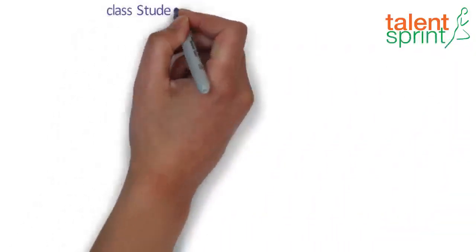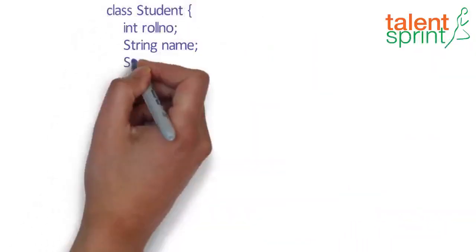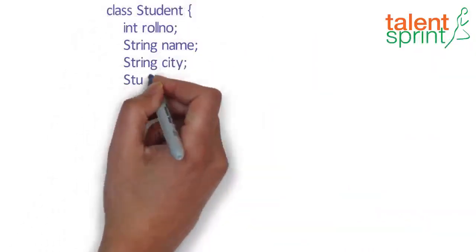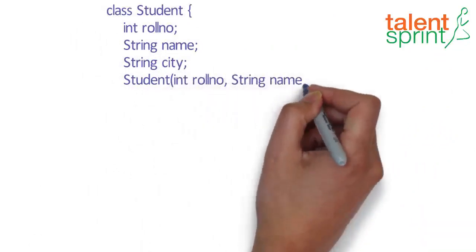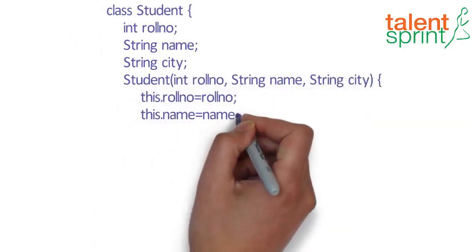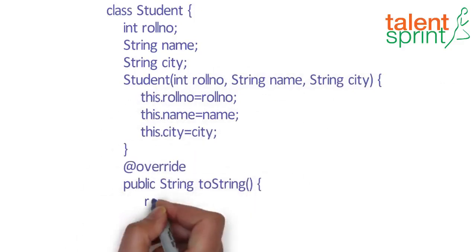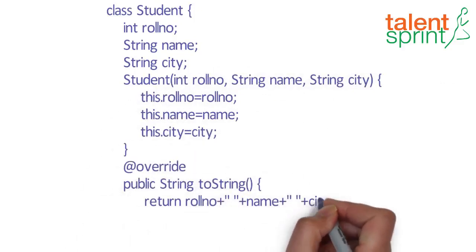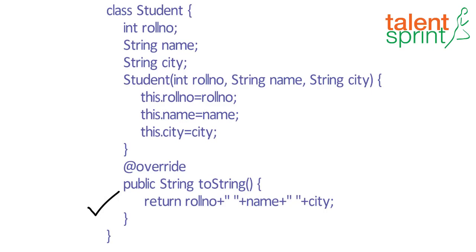Let's see how. In the example shown here, we have a class named Student with rollNumber, name, and city as three fields, and a constructor to initialize them. Now the toString() method would look something like this — a simple one-liner that would return the value of these three fields.